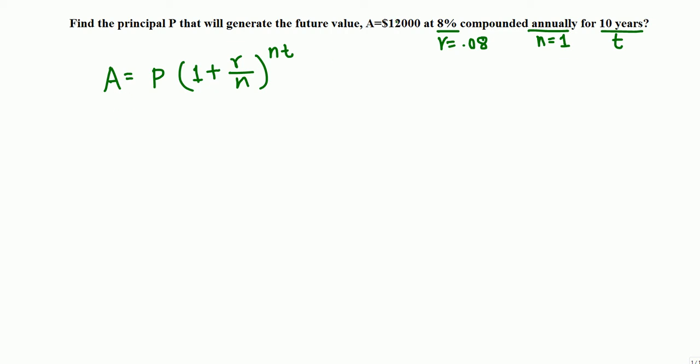Plug in the numbers. A is given, $12,000 equals P, that is what we are looking for, times 1 plus R, R is 0.08, over n, n equals 1, raised to n equals 1 times t, t is 10.